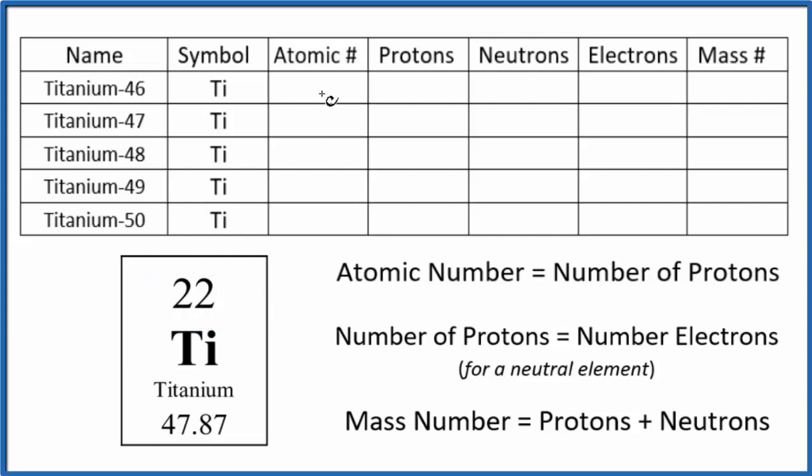So for the atomic number for titanium, all of these isotopes, it's 22. So we can just write that in. That's the identity of titanium.